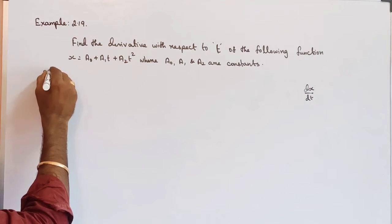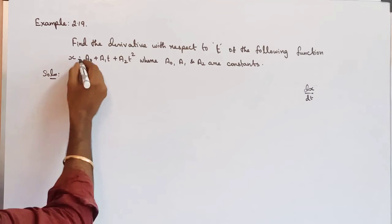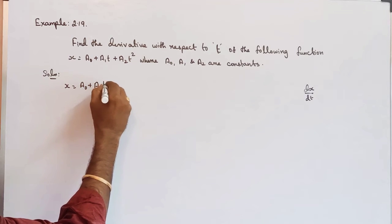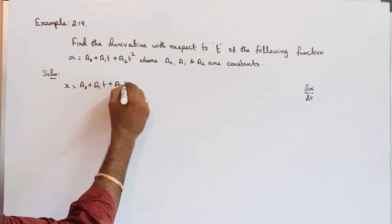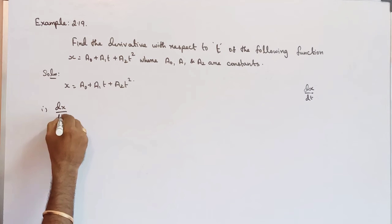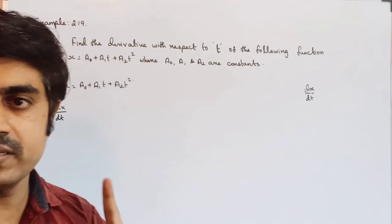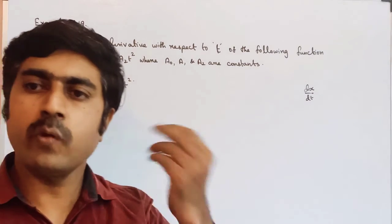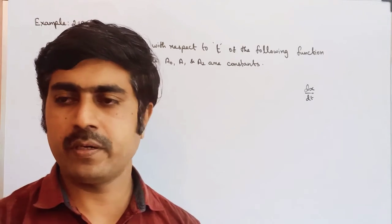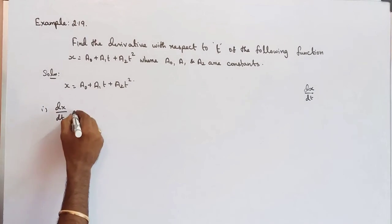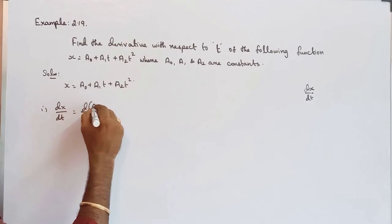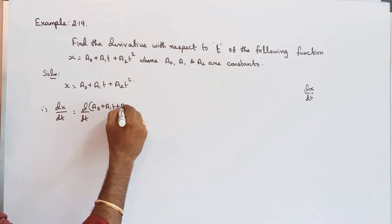So this is the solution. x is equal to a0 plus a1t plus a2t squared. So first we find dx by dt — this is the first derivative. Then d squared x by dt squared is the second derivative, and differentiating a third time gives the third derivative. So dx by dt equals d by dt of a0 plus a1t plus a2t squared.